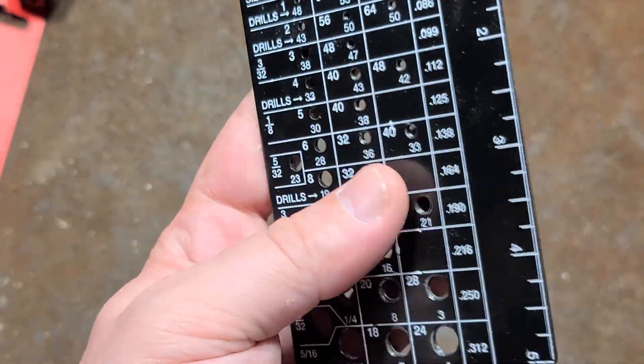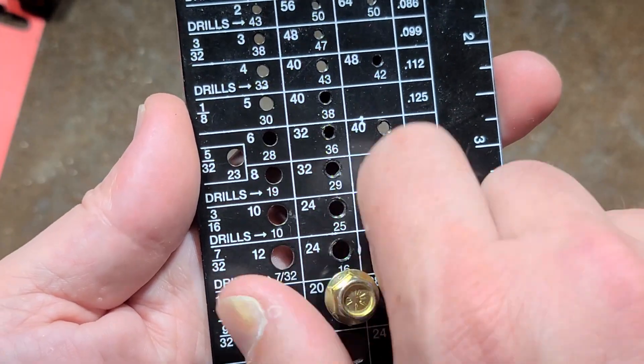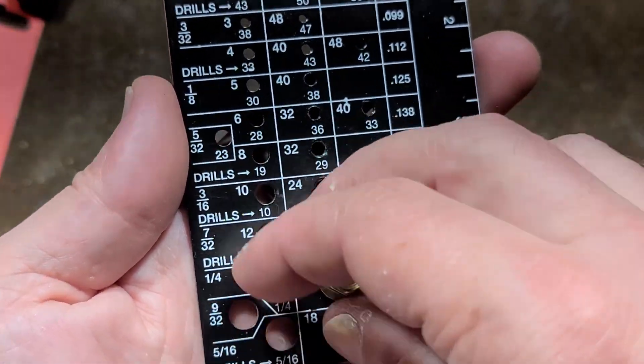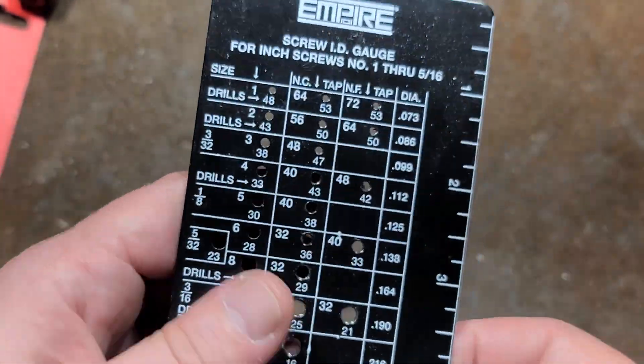And it's just kind of neat to see an Empire version of one of these thread gauges. These things are kind of handy just because you can double check on what threads that you need and easily allows you to figure out what drill sizes.